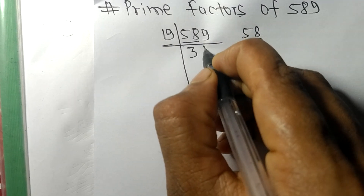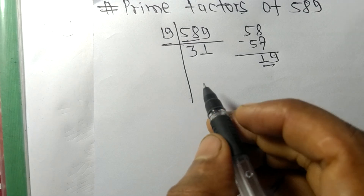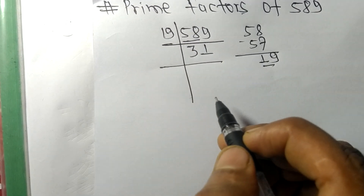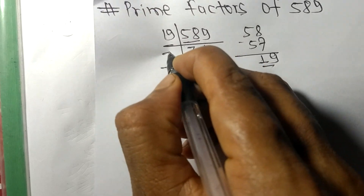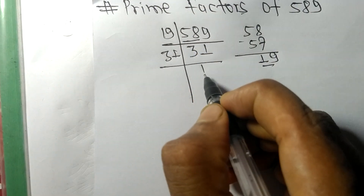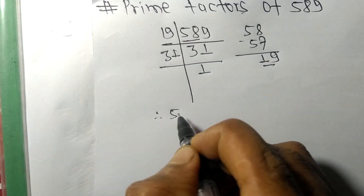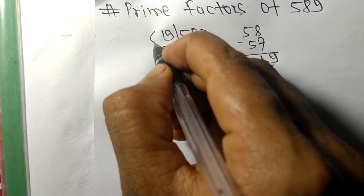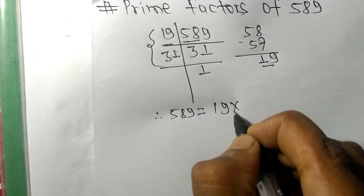19 times 1 equals 19, so now we get 31, which is a prime number. So it is divisible by 31 itself and we get remainder 1. Therefore 589 equals 19 times 31.